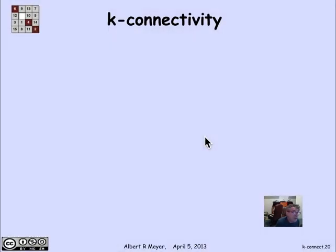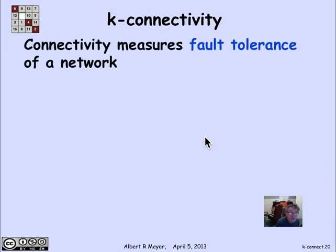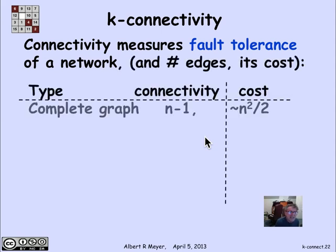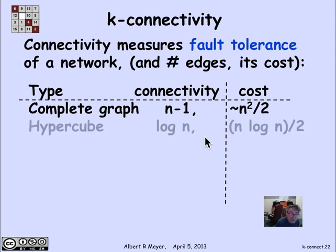To summarize about some graphs that we know about, given that connectivity measures fault tolerance in a network, we're interested in how many edges did it take to achieve this level of connectivity. The number of edges is kind of a measure of the cost. The complete graph on n vertices is n minus 1 connected, but it has about n squared over 2 edges.